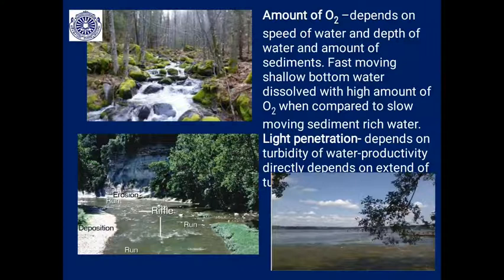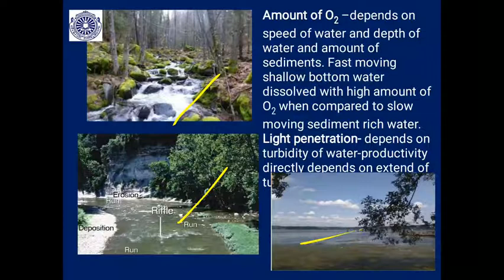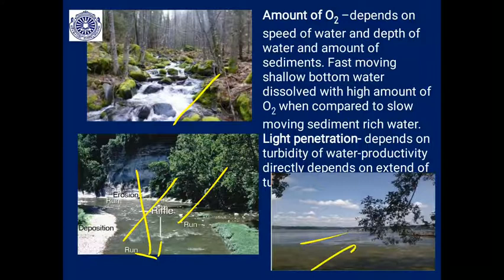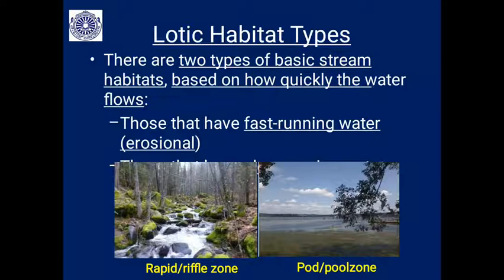The amount of oxygen depends on the speed of water, depth, and amount of sediments — fast-moving water has high oxygen and sediment-rich slow water has low oxygen. Turbidity of water also limits light penetration. In fast-moving water you can see a hard bottom, whereas in slow-moving water there is a lot of algal development that prevents light from penetrating deep. Light penetration is therefore also an important limiting factor.